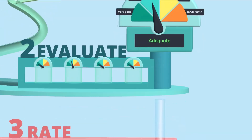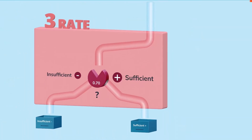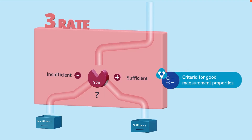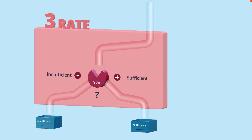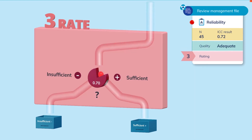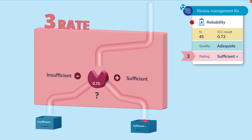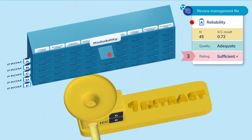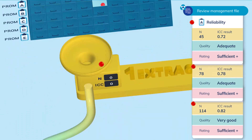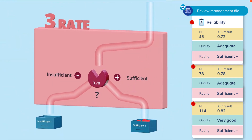At the third station, you rate the study results as sufficient — a plus — or insufficient — a minus. You base this on the COSMIN criteria for good measurement properties. If not enough information is available, you give it a question mark. Our study result is larger than the reliability criterion of 0.7 and gets a plus. You will repeat these 3 stations for the other studies on reliability of PROM A, then document your findings in the review management file.